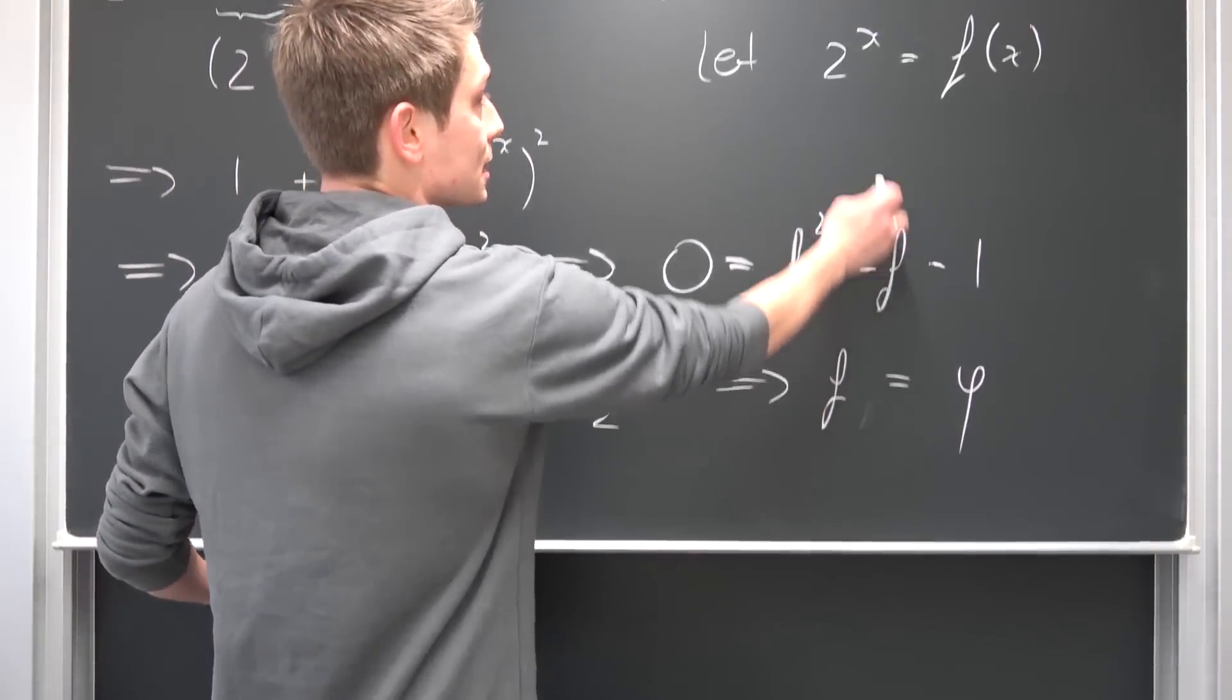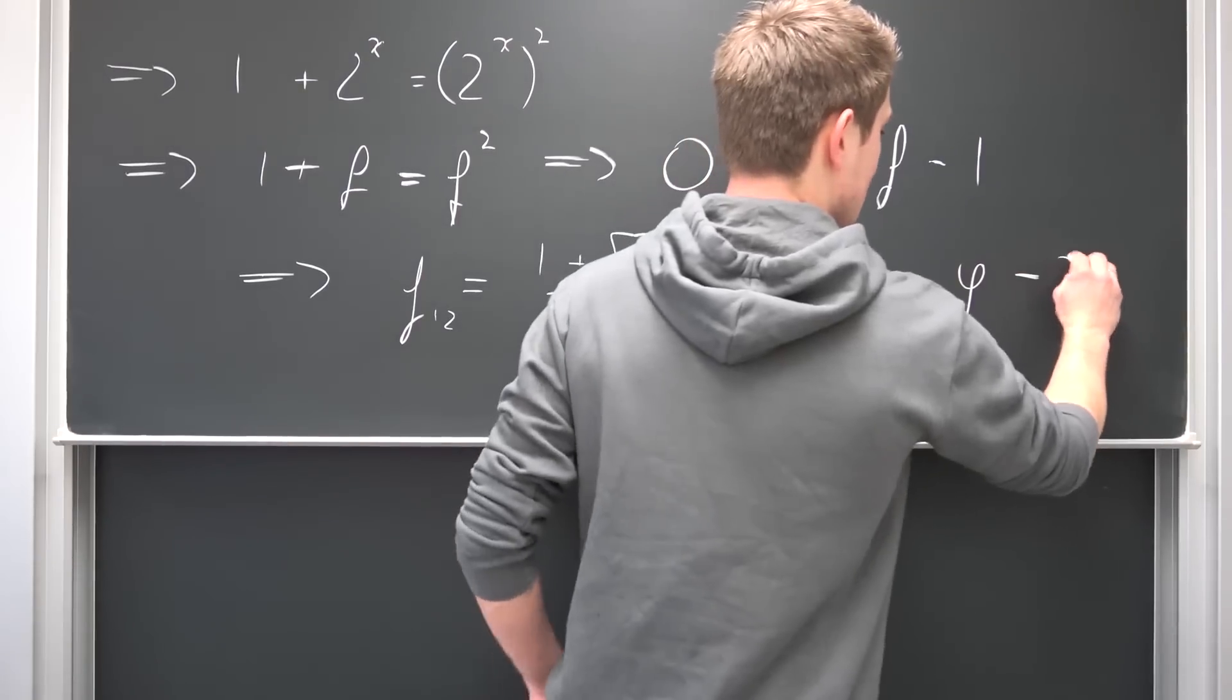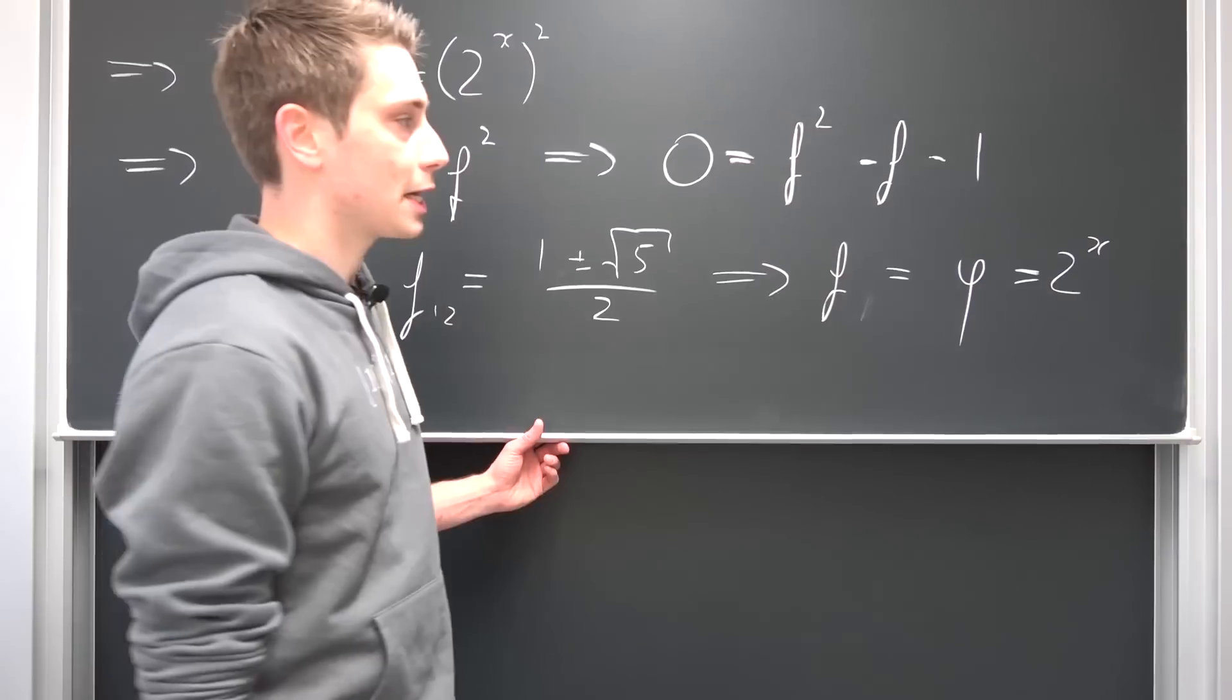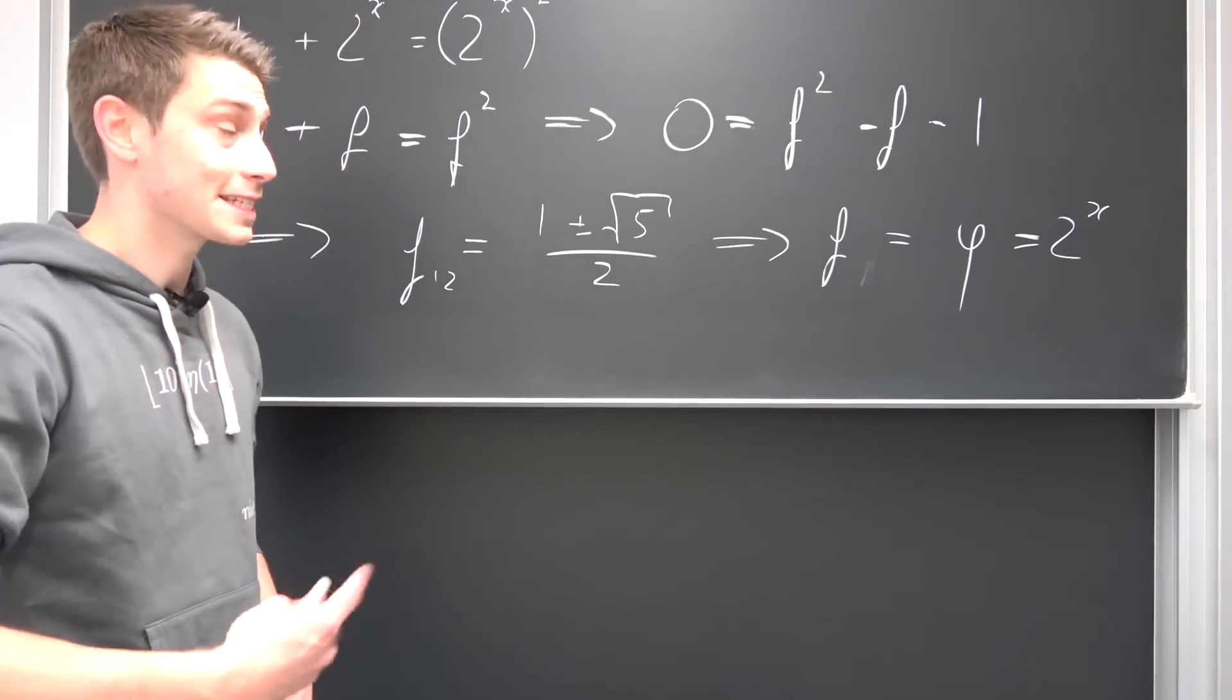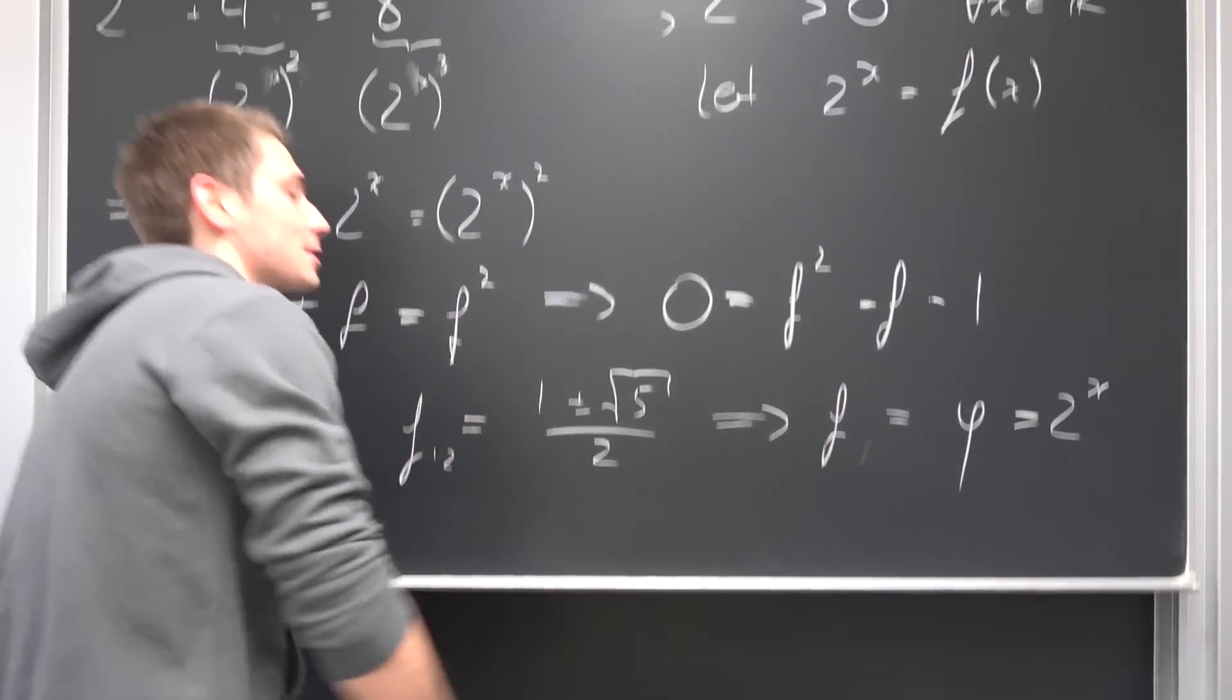And now we can actually plug other stuff into here because we want to solve for x, meaning phi is 2 to the x power. And from this point onwards we can modify our 2 to the x power because 2 to the x power is just e to the x times natural log of 2. Let us go to the next blackboard.